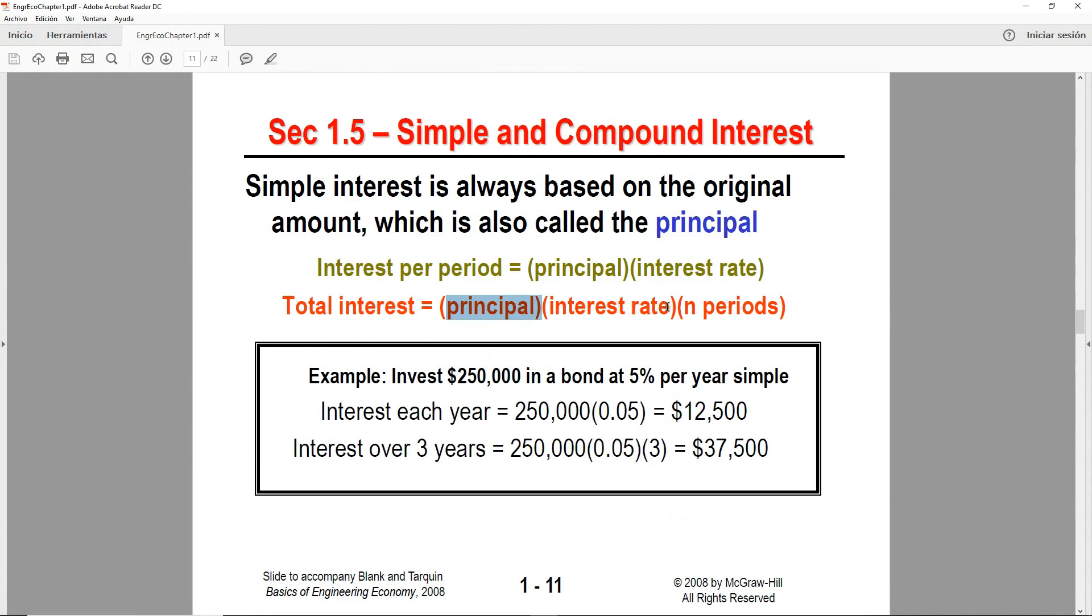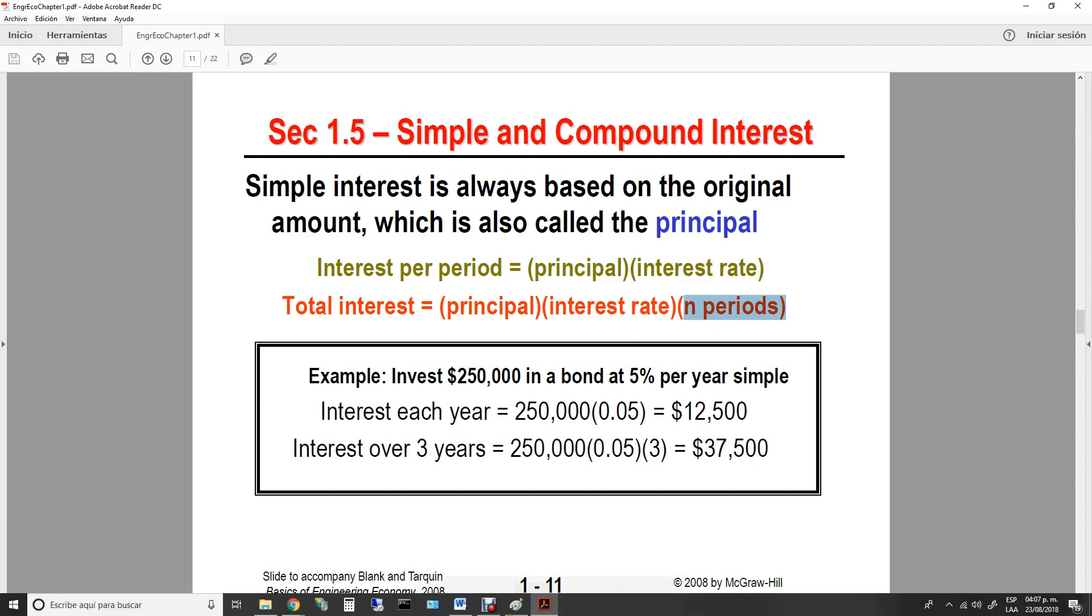Which is basically the interest per period, because you have the principal and the interest rate. These two come from the formula above it. And you just multiply times the number of periods, because remember, it's the same interest. It just gets repeated n number of periods.